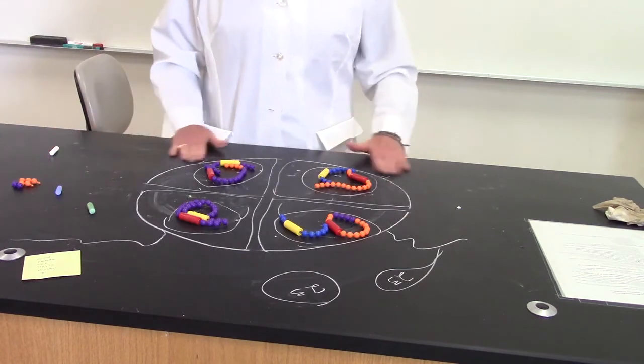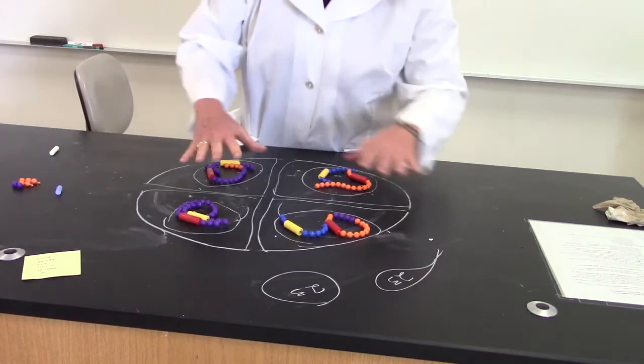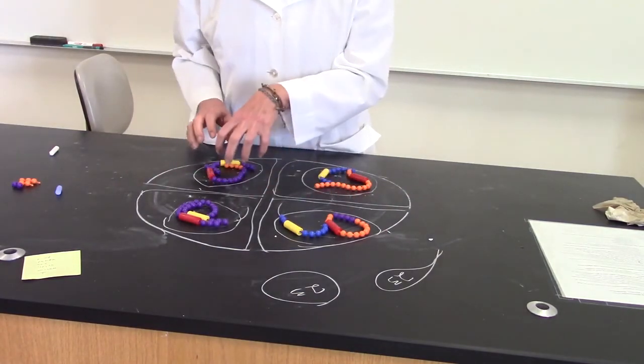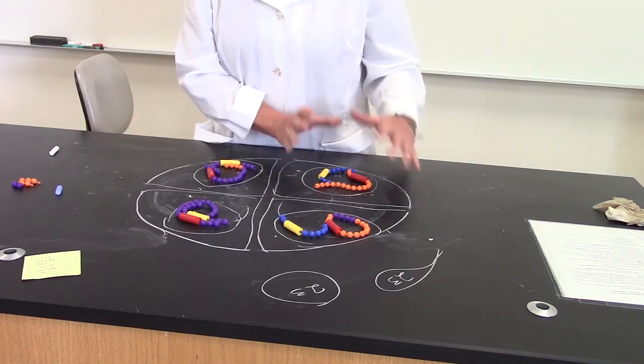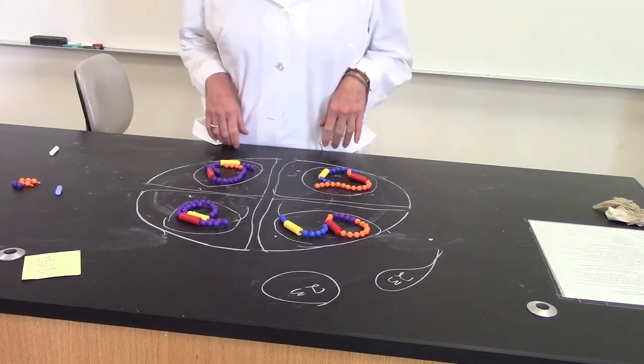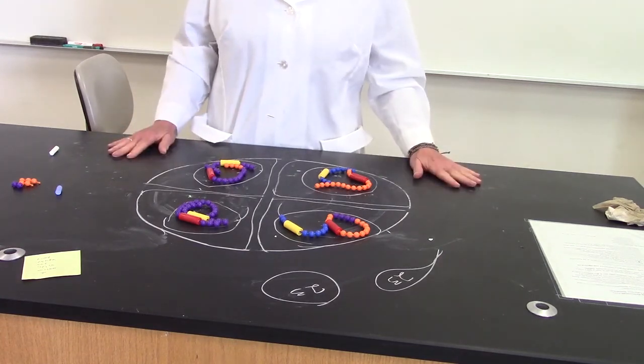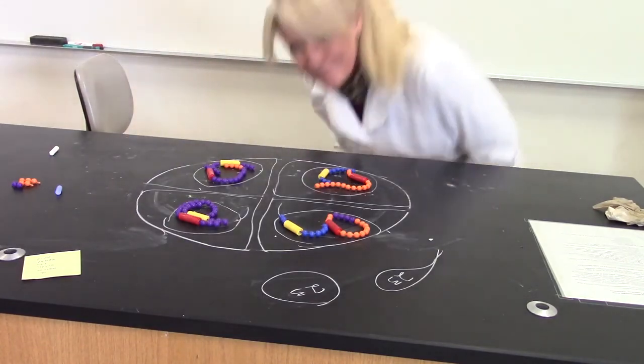If you're a female, you have three that become what are called polar bodies - they kind of get stuck on the side. Then you have one that's the egg, the one that gets to be the baby if it's fertilized. Okay, I think that's it. Bye!